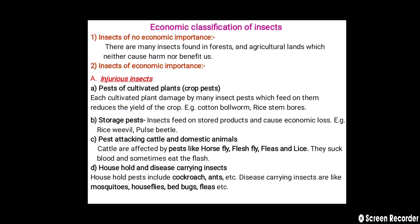The economic classification of insects: the first category is insects of no economic importance. There are many insects found in forests and agricultural lands which neither cause harm nor benefit to us. The second category is insects of economic importance, in which the first subcategory is injurious insects.